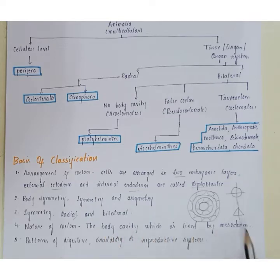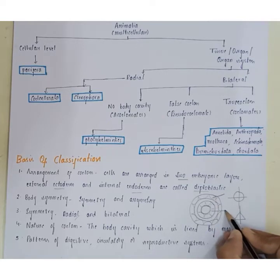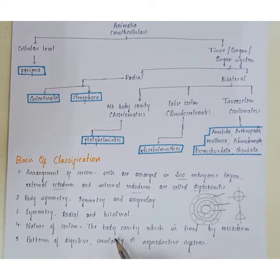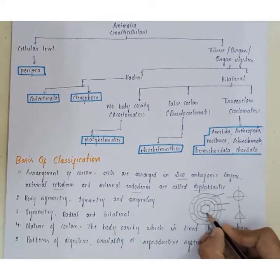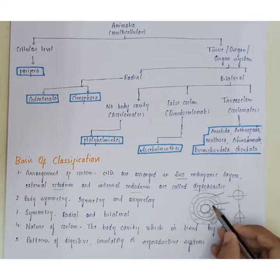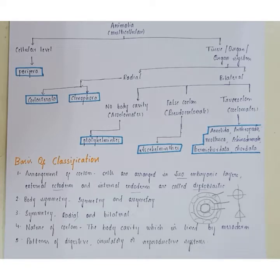The fourth basis is the nature of coelom. The coelom is the body cavity lined by mesoderm. The outer layer is ectoderm, the internal layer is endoderm, and the middle layer is mesoderm. The central body cavity lined by mesoderm is called the coelom. The fifth basis is patterns of digestive, circulatory, and reproductive systems — what organs are present for each of these systems.